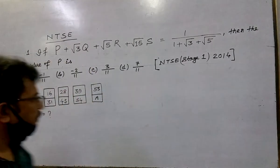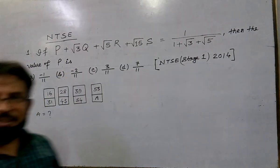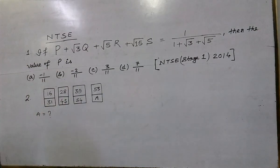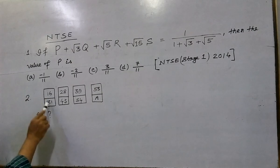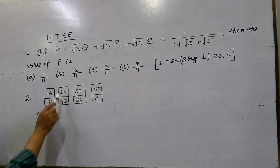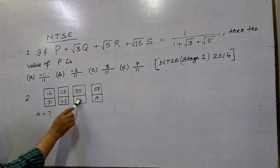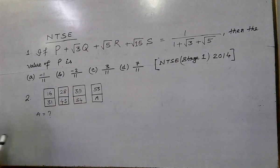The other question is a difficult one. The second question is: 16, 31, 28, 43, 39, 44, 53, 8.